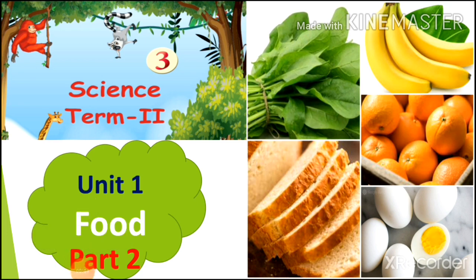In our previous video we saw about 5 main nutrients. The 5 main nutrients required by our body are carbohydrates, proteins, fats, vitamins, and minerals.